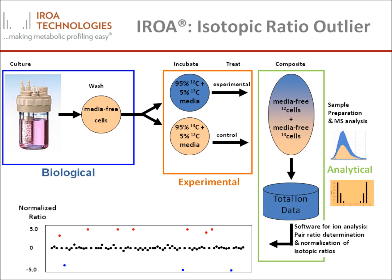Every molecule in the 5% cells will demonstrate a strong M plus 1 peak, while every molecule in the 95% cells will demonstrate a strong M minus 1 peak. After labeling, the 5% labeled cells may be treated with a stressor, say a drug, and because of these distinct patterns, may be directly compared to the 95% control in a single pooled analysis. Using a pooled sample dramatically removes technical variability.